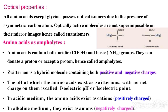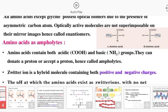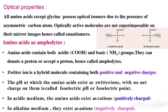In the zwitterion condition, the -NH2 group carries a positive charge and the -COO⁻ carries a negative charge. These two charges — positive and negative — cancel each other out, so there is no net charge. The pH at which this condition exists is called the isoelectric point.